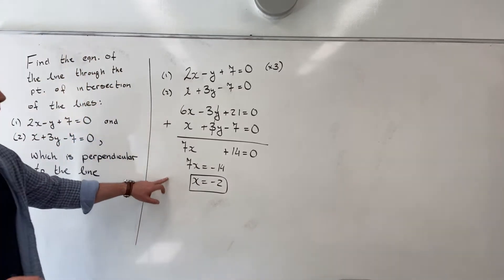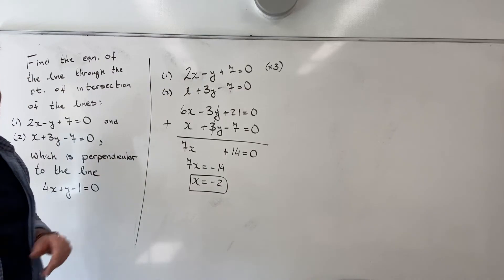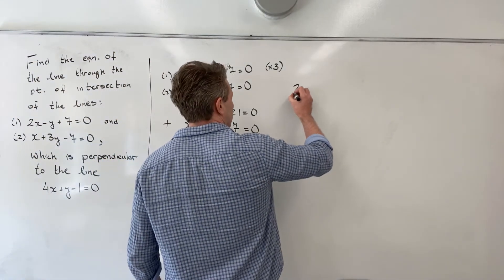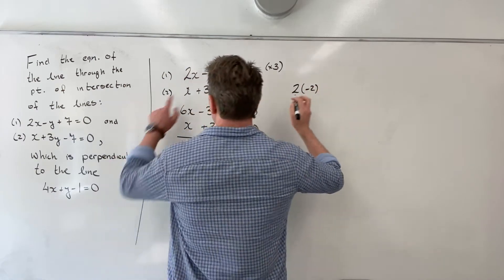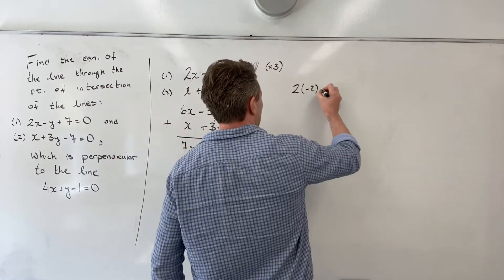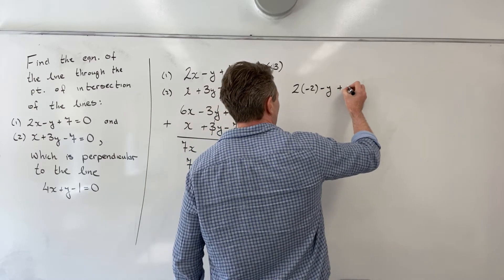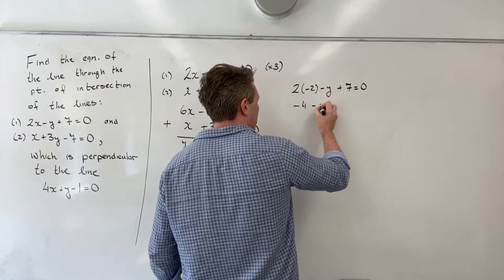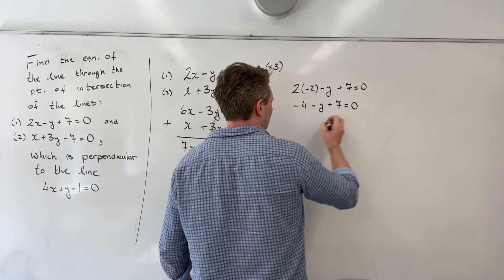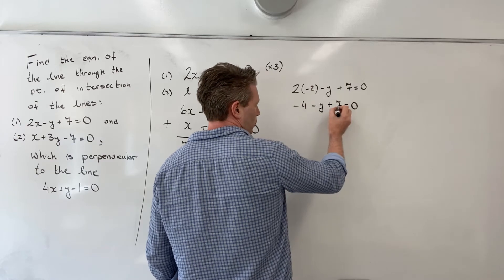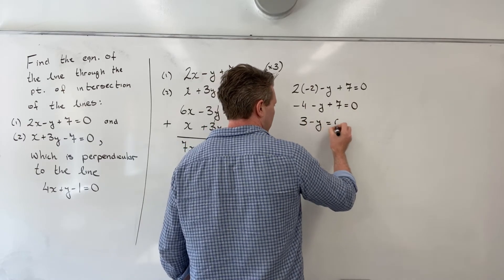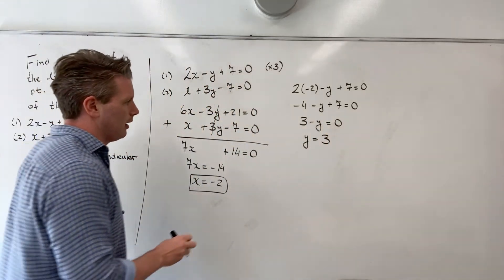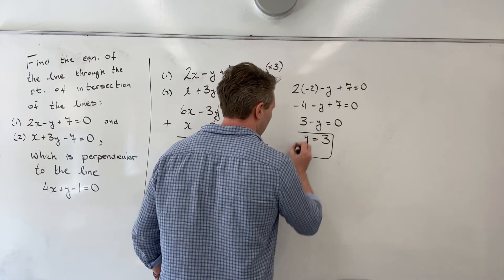In order to find my y value, I'm going to sub back in for x into one of my original equations. I'll take equation number 1. And so I'll have 2 times minus 2, minus y, plus 7 equals 0. So I have minus 4 minus y plus 7. And therefore, minus 4 plus 7 is 3, minus y equals 0, or y equals 3. So I have my y value now.